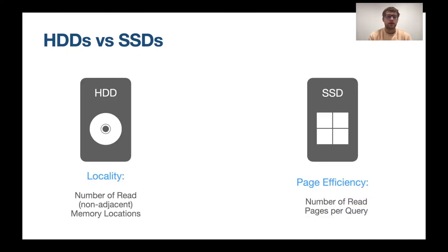In order to be competitive with databases that don't have privacy guarantees, we need to look at memory accesses, and for this it's important to know how memory is built. There are two big types: HDDs, where locality matters, and SSDs, where page efficiency matters. Locality measures the number of reads at non-adjacent memory locations — HDDs can read adjacent locations very fast, so the higher this number the slower the read. SSDs only care about the number of pages read per query; pages are a few kilobytes large and reading a single page is essentially as efficient as reading just a few bytes from it.